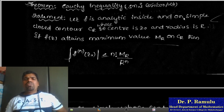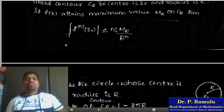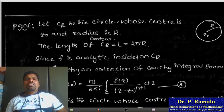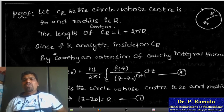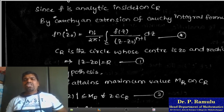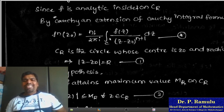Proof. Let C_r be the circle whose center is z₀ and radius is r, with equation |z - z₀| = r. The length of the contour C_r is 2πr. Since f is analytic inside and on C_r, by the extended Cauchy integral formula: f^(n)(z₀) = n!/(2πi) × integral over C of f(z)/(z - z₀)^(n+1) dz.